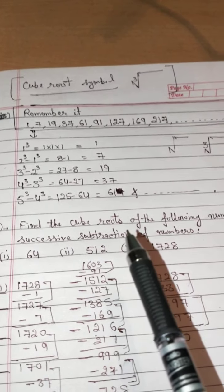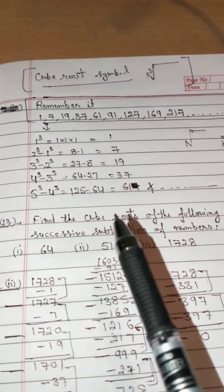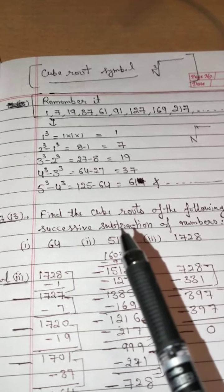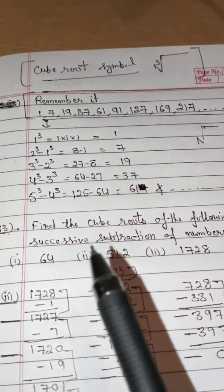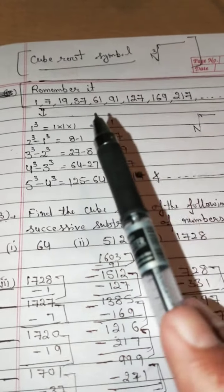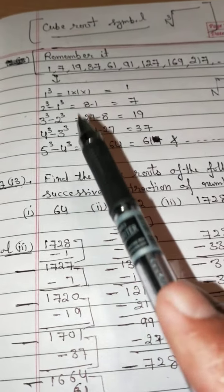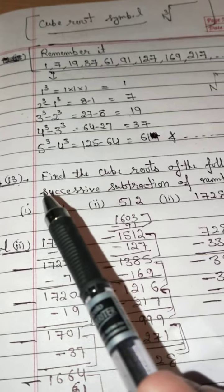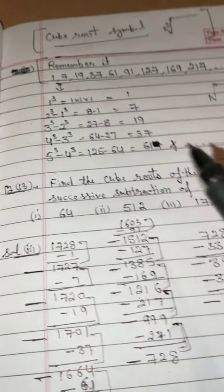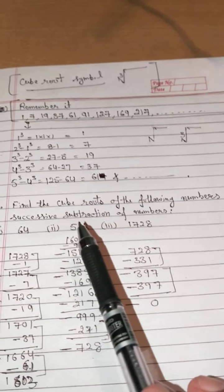Find the cube roots of the following numbers by successive subtraction. In square and square root, you found the square root using repeated subtraction of consecutive odd numbers. But here they are not consecutive odd numbers — this pattern comes from the differences of perfect cubes. You can find the further numbers: 6³−5³, 7³−6³, 8³−7³, 9³−8³, 10³−9³, and so on.